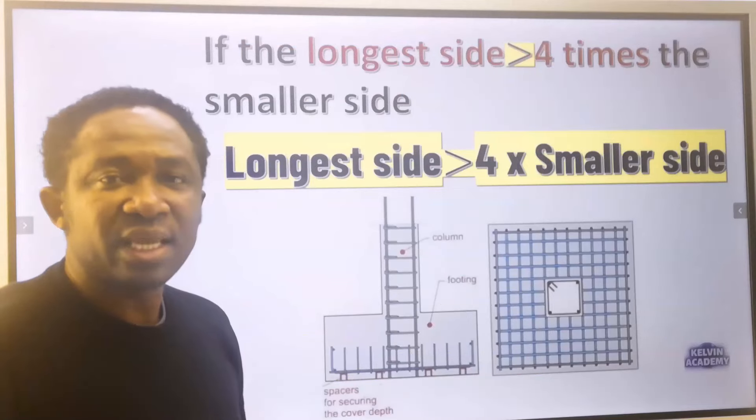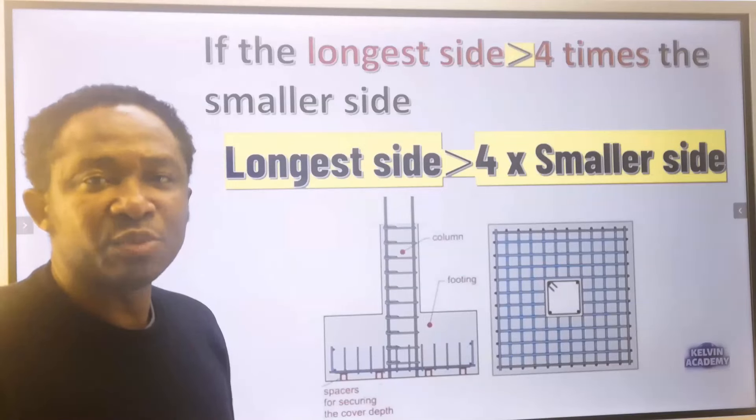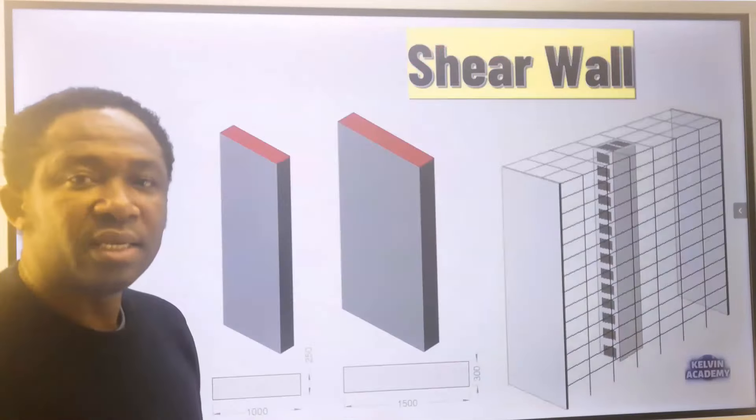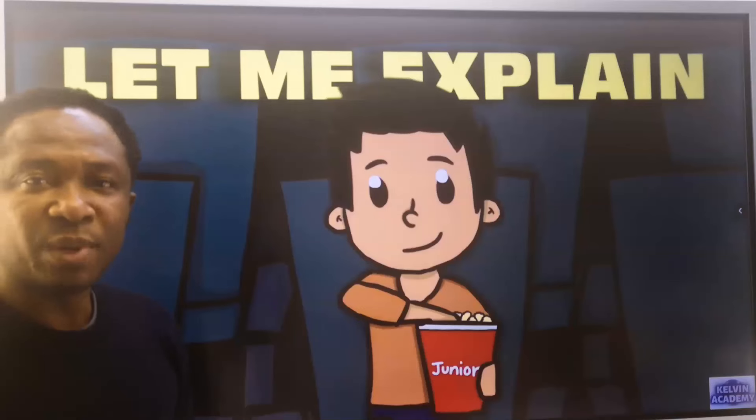But in the footing dimension, if the longest side is greater than 4 multiplied by the smaller side, then you are designing a shear wall. Let's explain this further.